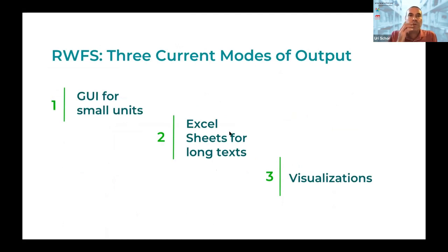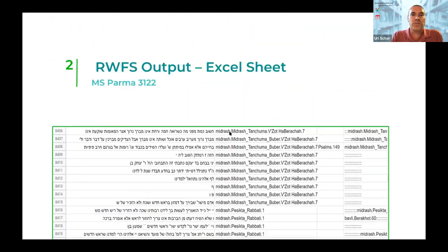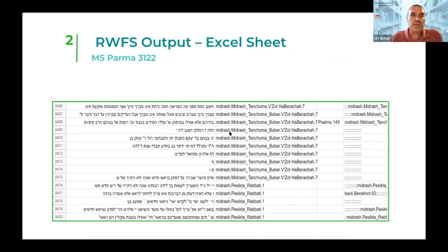The three modes in which we use Rufus are: the GUI for small units, running it offline on larger book-length texts, and visualizations. When this is the best way to look into the data and see when a work is used, when the text switches from one work to another — this is an example of the output in Excel.